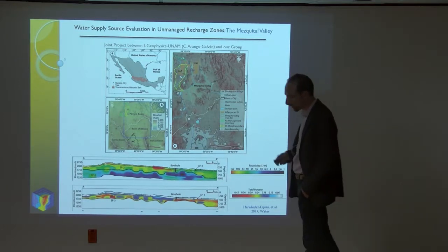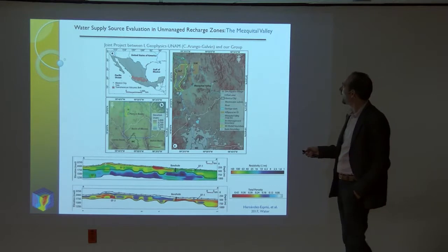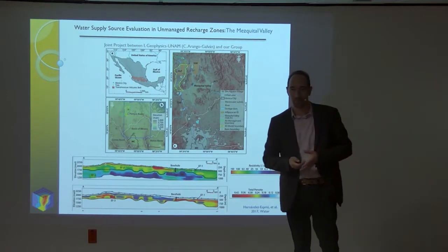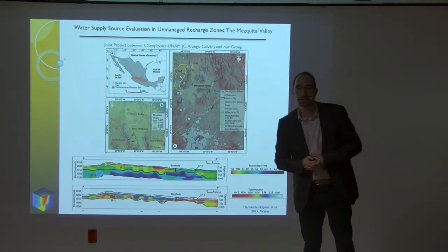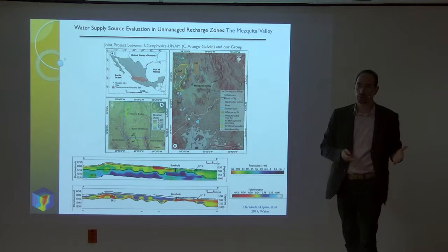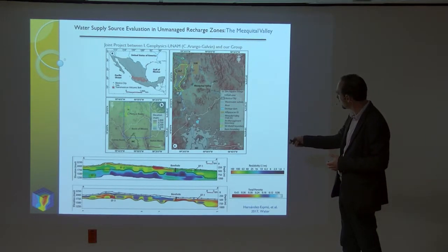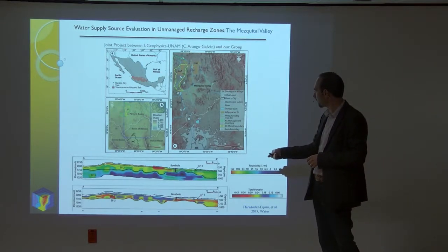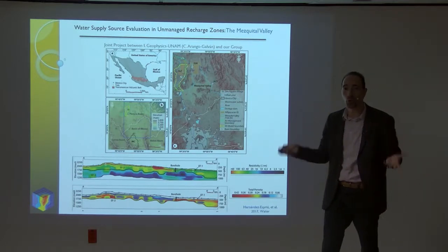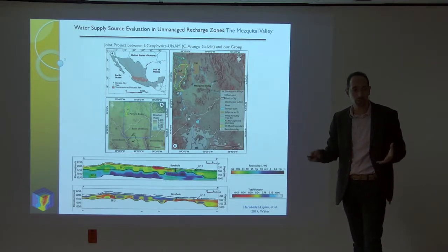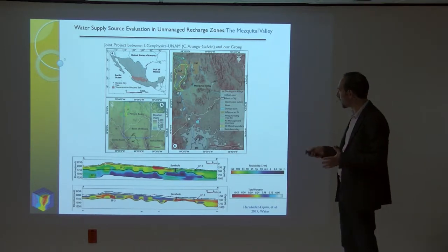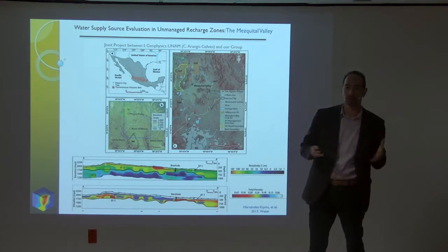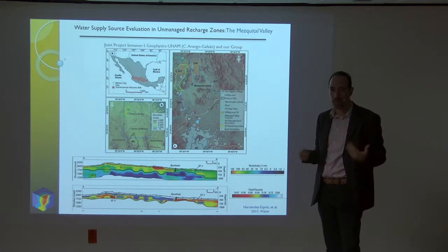In another study, we assessed a water supply source evaluation in one of the most unique places in Mexico: the Mezquital Valley, probably the largest raw wastewater irrigation district in the world. All the wastewater from Mexico City is discharged through the Mezquital Valley — it is raw wastewater. The National Water Agency is planning to build a new water treatment plant, but we currently discharge a lot of wastewater there. Finding new and reliable water sources in this kind of environmental setting poses a major scientific challenge.